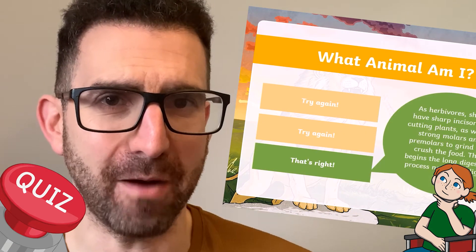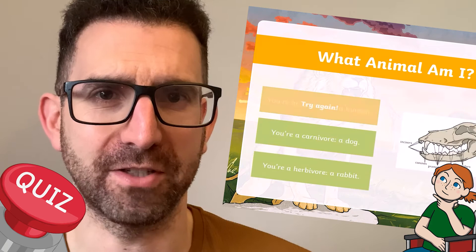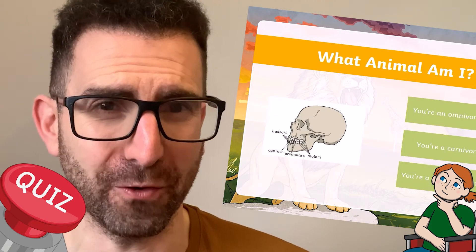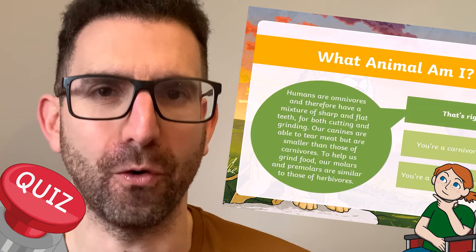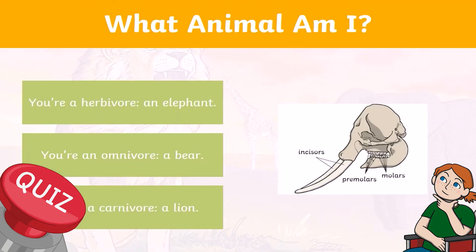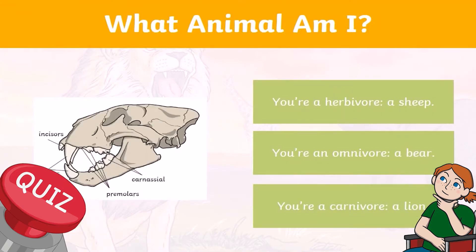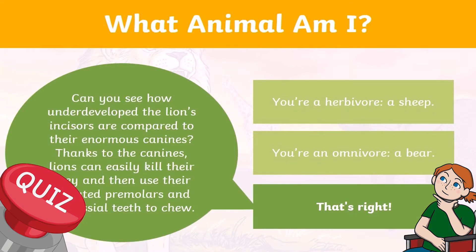Once all the basics have been covered, the Comparing Animal Teeth Key Stage 2 PowerPoint also has a fun quiz that asks children to identify if an animal is a carnivore, a herbivore or an omnivore based on its teeth. It's a great way to test their knowledge and spot any lingering points of confusion.